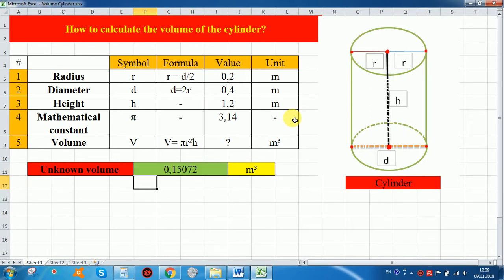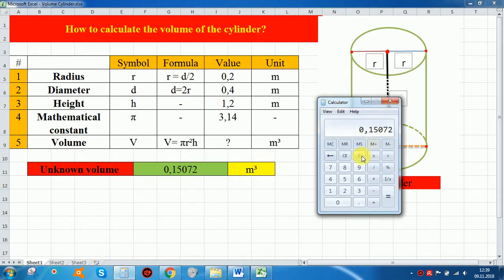So it is ready. This cylinder volume is 0.15072. Simply we can calculate using calculator also, I will show you now.